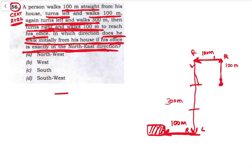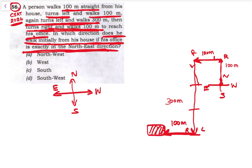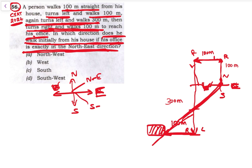Let's make the diagram. This is north, this is west, this is south, and this is east. Now the office is at point C. This is east and this is west. So from home, the office appears to be in the southwest direction. This is southeast, this is southwest, and this is northwest.